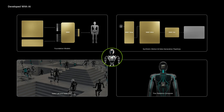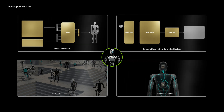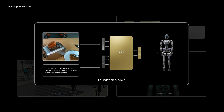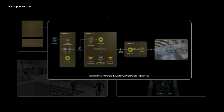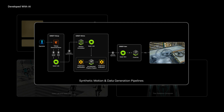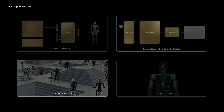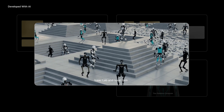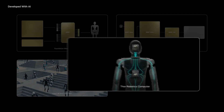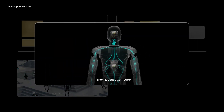NVIDIA Isaac Groot helps tackle these challenges, providing humanoid robot developers with four things: robot foundation models, data pipelines, simulation frameworks, and a Thor robotics computer.